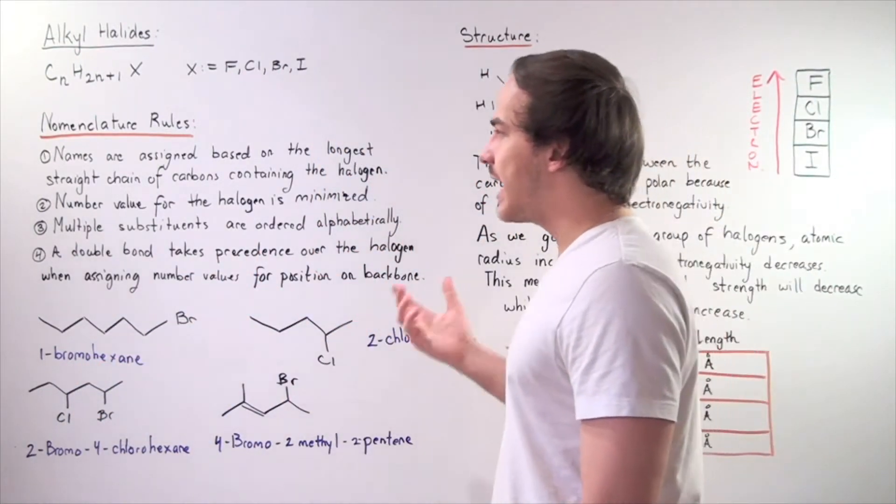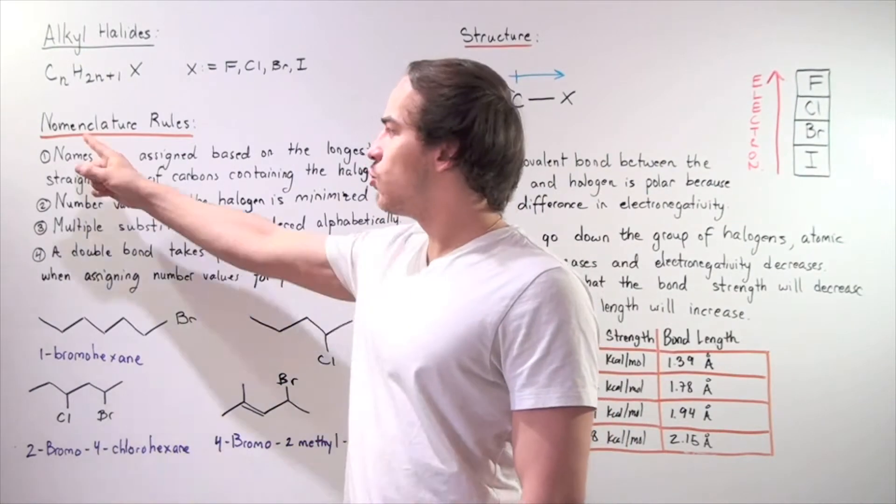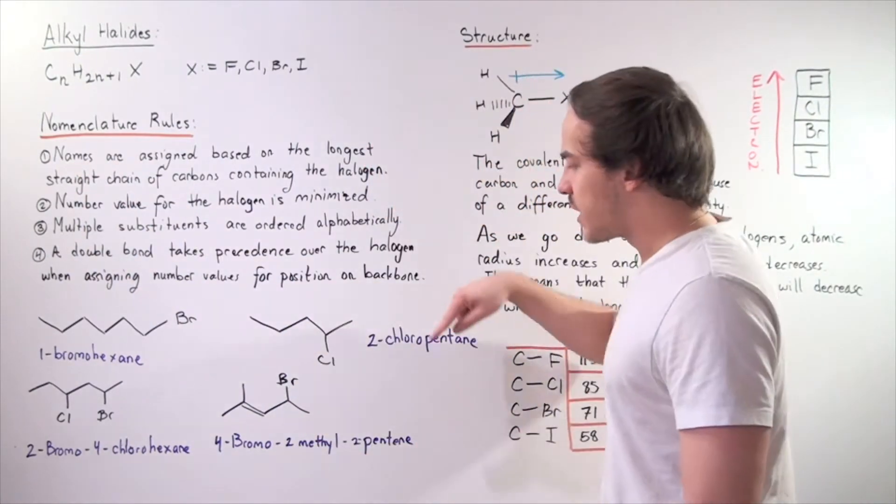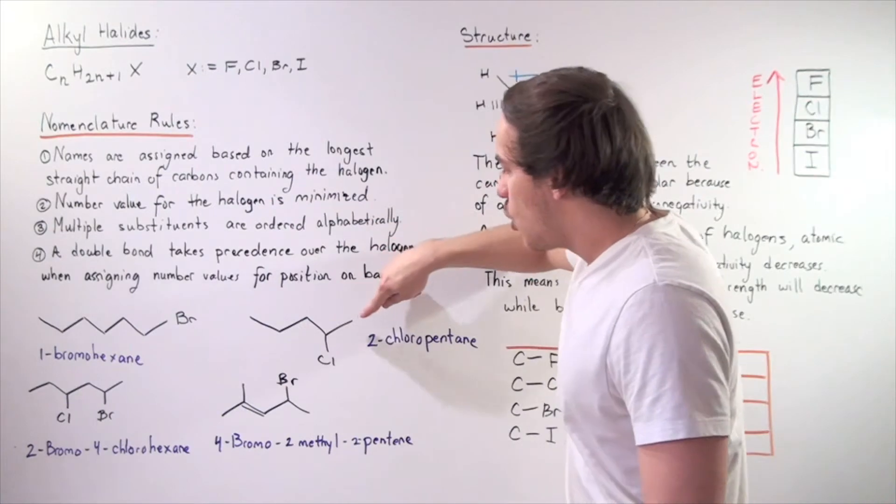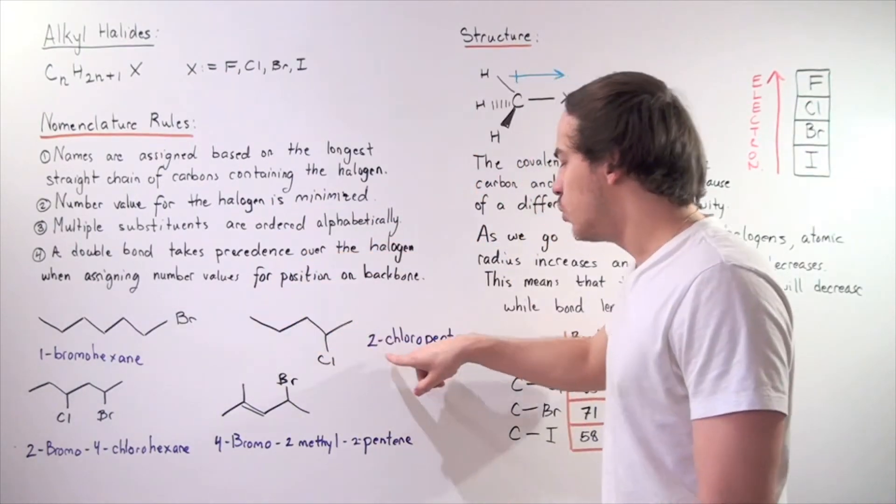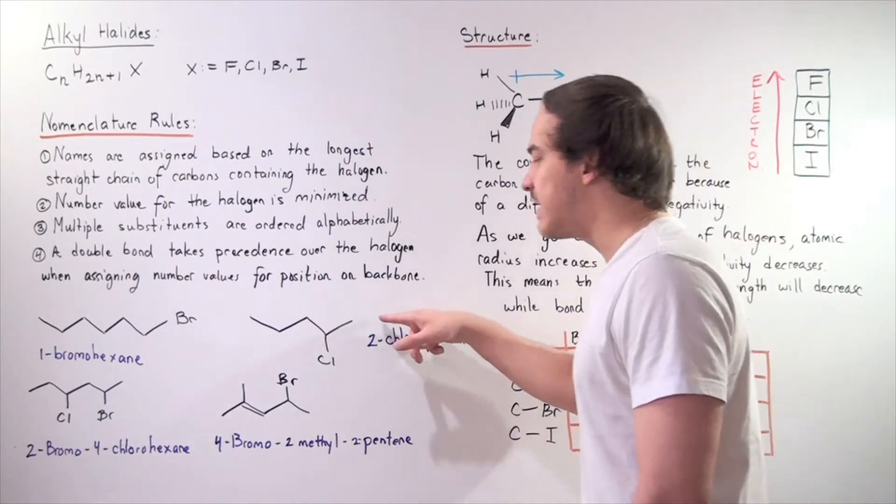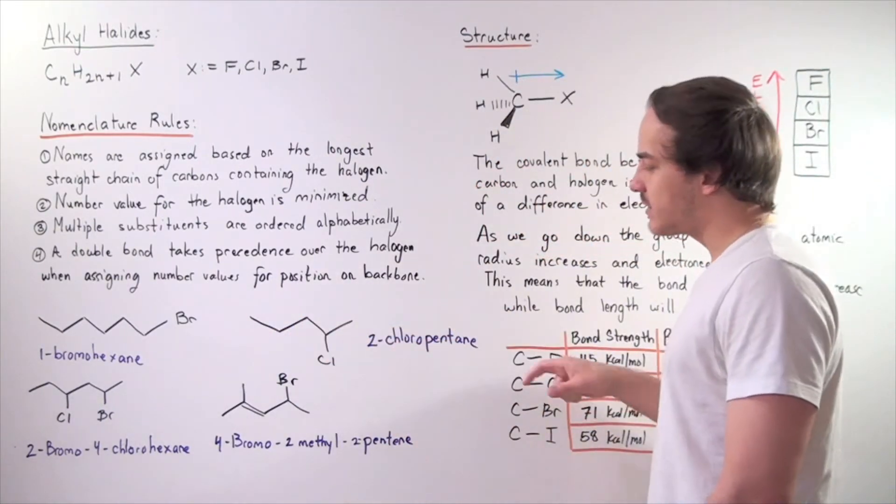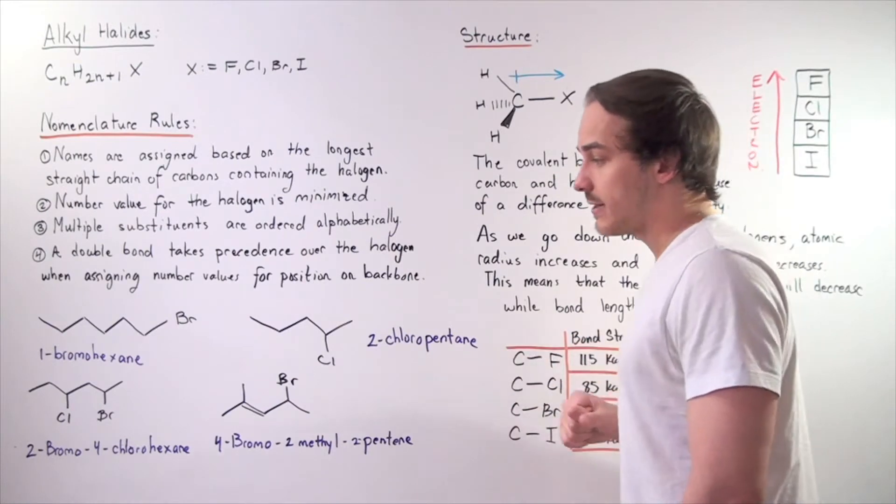Example two. Once again, we're taking into consideration rules one and two. We start from this end because of rule two: one, two chloro, three, four, five. Two chloropentane. We have an alkane, five carbon alkane, so we say pentane, two chloropentane.